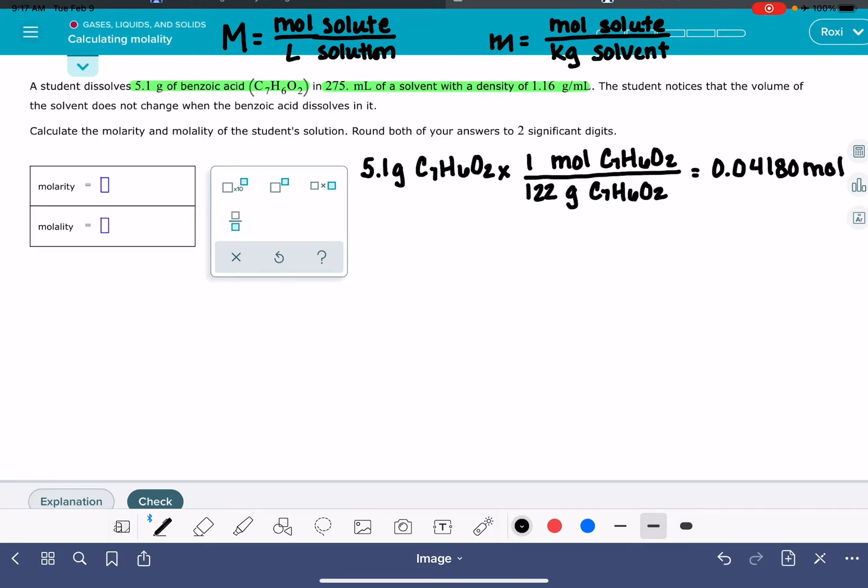Okay, so let's go ahead and do the molality calculation first, even though it's asking for molarity on top here. Let's just do the molality calculation first. For the molality calculation, we want the moles of our solute, which we've already calculated, and we want to divide it by the solvent in units of kilograms.